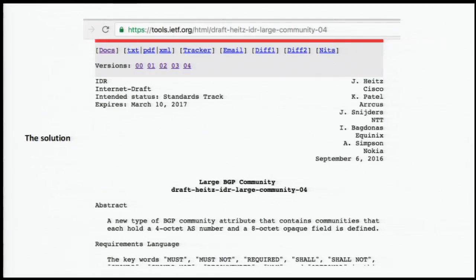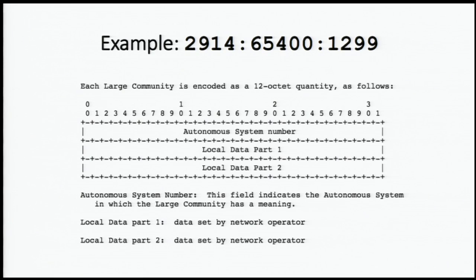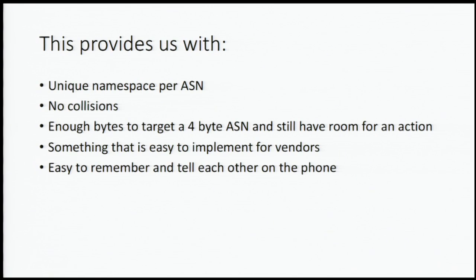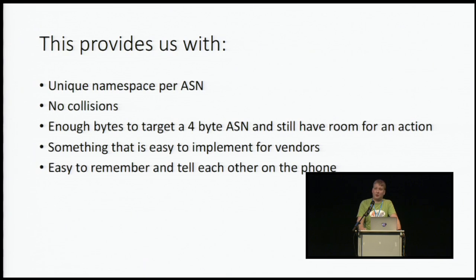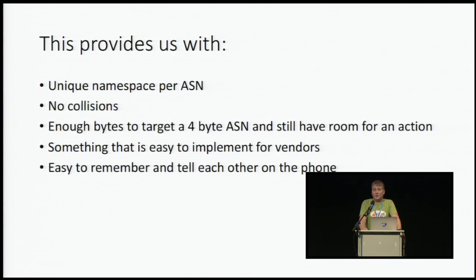A draft is being submitted; the draft is pretty short. In essence, what it provides us with is 12 bytes. The first four bytes are your autonomous system number, be it two bytes or four bytes — doesn't matter, four bytes are enough to store that. What follows is eight bytes that are for you to use, and those eight bytes have a meaning within your autonomous system number. This provides us with a unique namespace per ASN — no longer will we collide with each other, no longer do we have to put private ASNs into the global administrator bit. With eight bytes, we have enough room to target a 4-byte ASN and put in an action code. These communities are also relatively easy to remember; the notation is very similar to what we're already used to, just a little bit bigger.